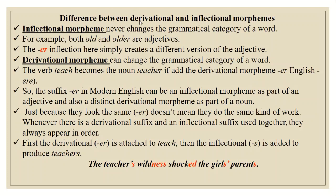The difference between derivational and inflectional morphemes: inflectional morphemes never change the grammatical category of a word. For example, both 'old' and 'older' are adjectives — the '-er' inflection simply creates a different version of the adjective. However, derivational morphemes can change the grammatical category of a word. The verb 'teach' becomes the noun 'teacher' if we add the derivational morpheme '-er'. So the suffix '-er' in modern English can be an inflectional morpheme as part of an adjective, and also a derivational morpheme as part of a noun — just because they look the same doesn't mean they do the same kind of work.